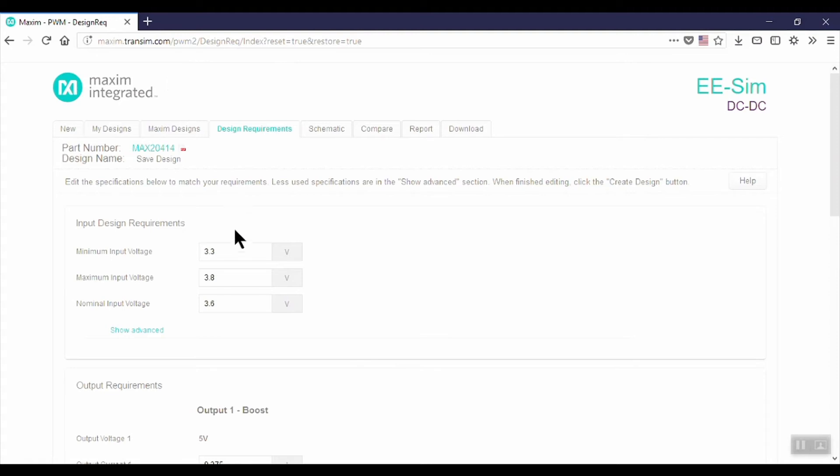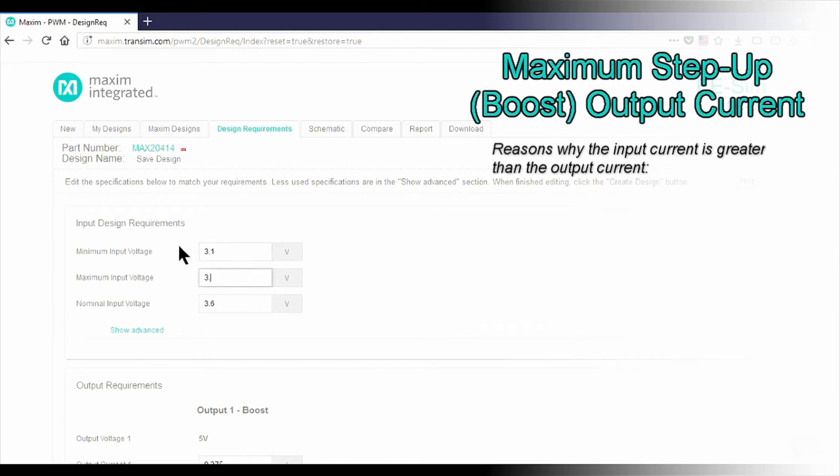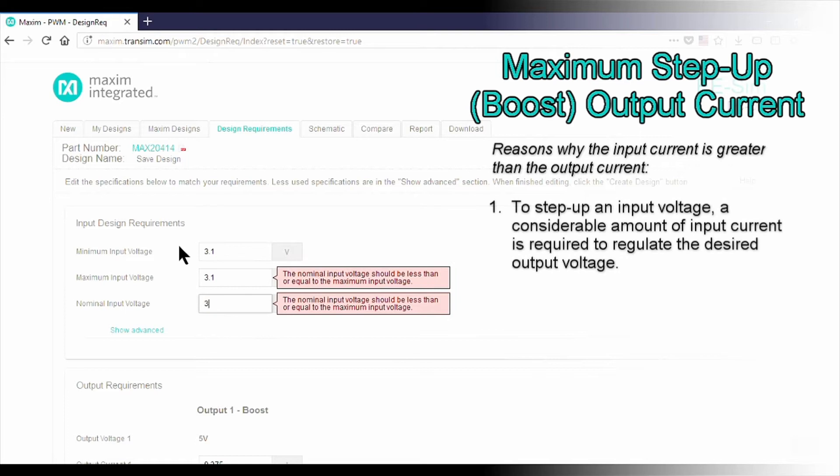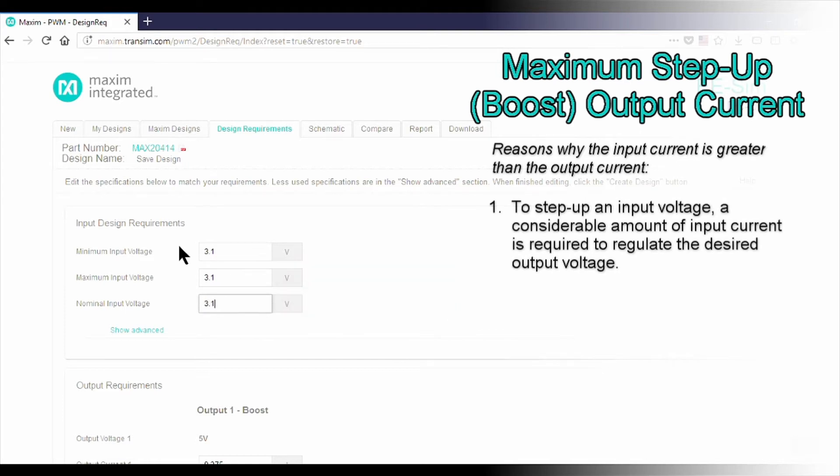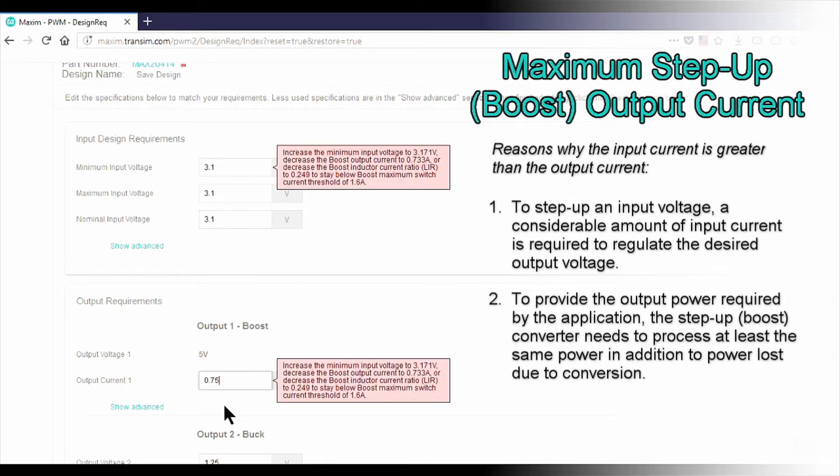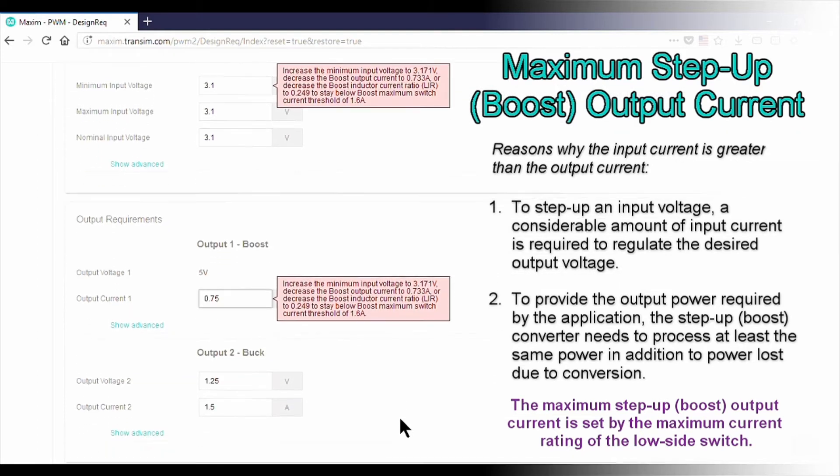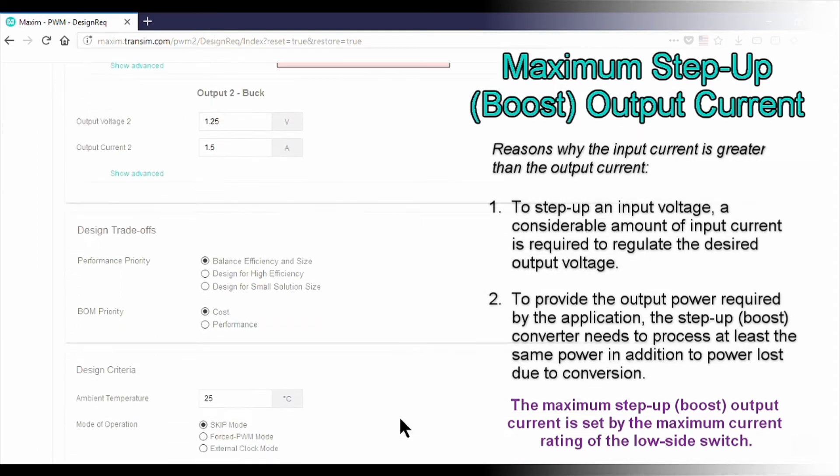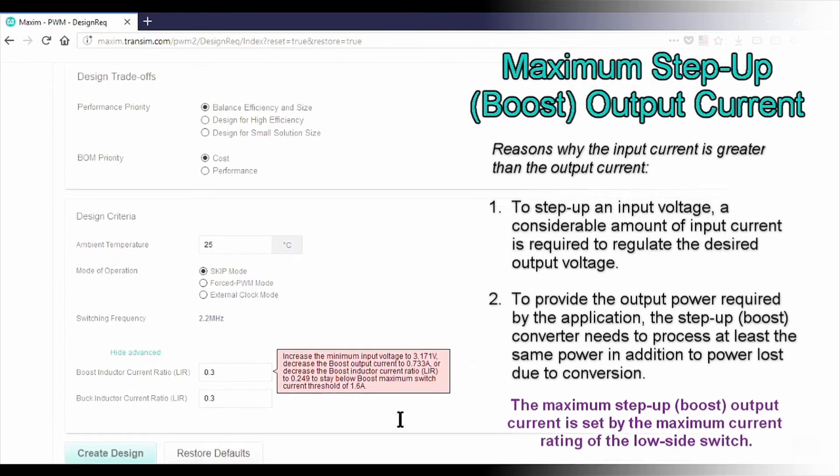One way a boost converter limits the allowable output current is by setting a maximum limit on the magnitude of the current that flows through the internal low side switch. Because a boost converter steps up an input voltage, a considerable amount of input current is required to regulate the desired output voltage. This input current, which is stored as magnetic energy in the inductor, may be large enough to exceed the maximum current limit of the internal low side switch.